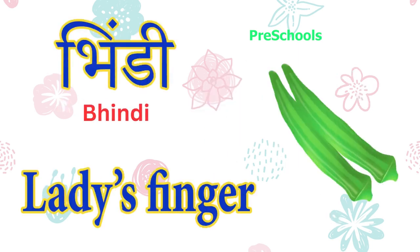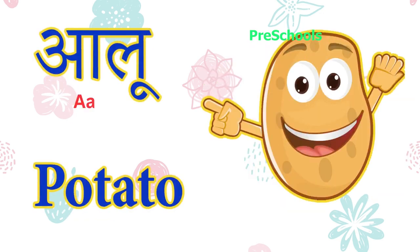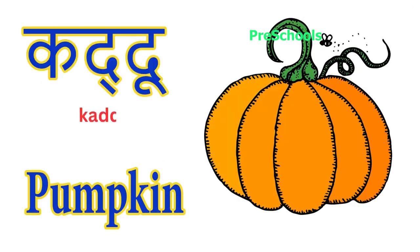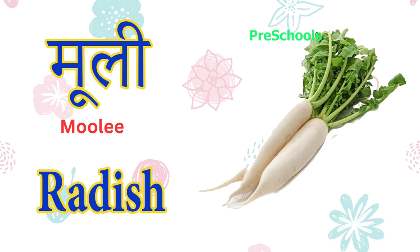Bindi matlab — ladies finger. Pudina matlab — mint. Aalu matlab — potato. Pyaaj matlab — onion. Kaddu matlab — pumpkin. Kairi matlab — raw mango. Mooli matlab — radish.